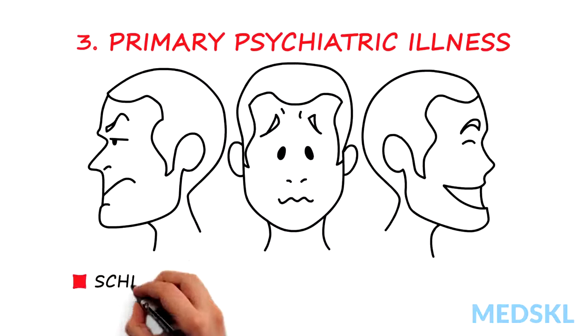And finally, the third is a primary psychiatric illness, such as schizophrenia or a mood disorder with psychotic symptoms.